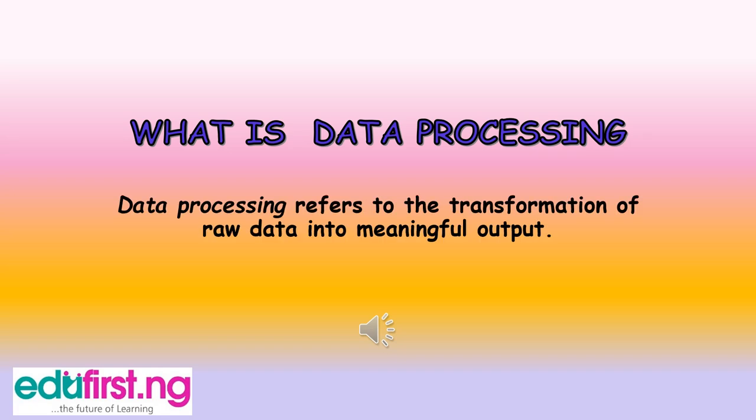Data processing refers to the transformation of raw data into meaningful output. Data are being transformed into meaningful output called information. For example, our newspapers, our textbooks, our novels — they are information, they are meaningful output.